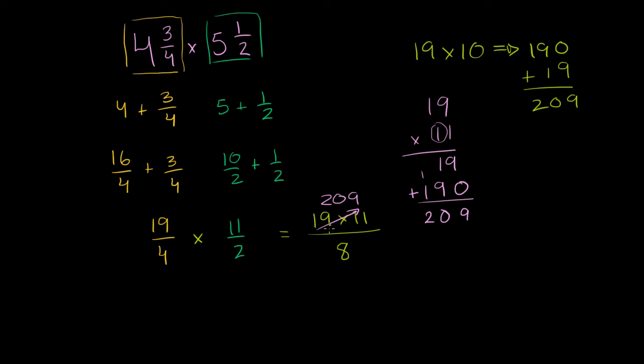So this part right over here is 209 over 8. And that is the right answer, but we've written it as an improper fraction. Now we can convert it back to a mixed number. So we want to convert 209 over 8 to a mixed number.